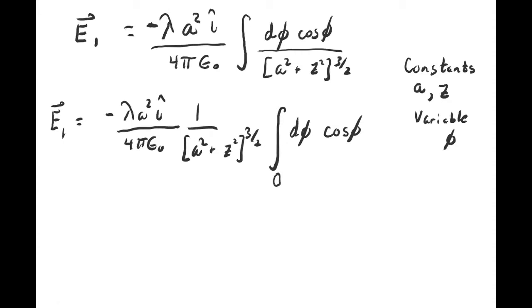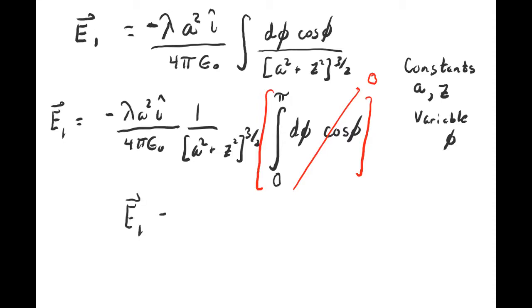Since we have a semicircle, the azimuthal angle goes from 0 to pi, not 2 pi. This is an elementary integral — the integral of cosine phi from 0 to pi — and you should recognize that it vanishes. So there's not going to be a contribution at all from E sub 1. It's simply zero.